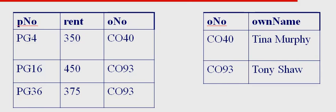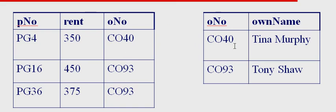What is the foreign key? The foreign key is owner number in the property table. Owner number in the property table references owner number in the owner table. This owner number is referring to the owner number that we see in the owner table — this has to exist in the owner table. These IDs are not just random IDs.